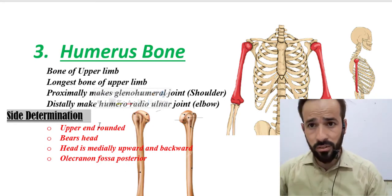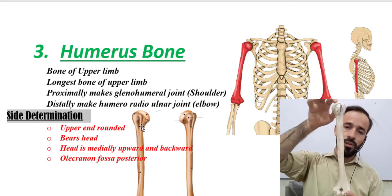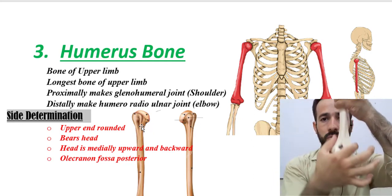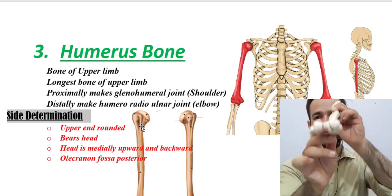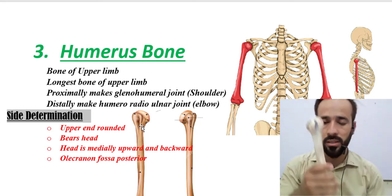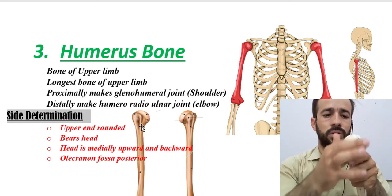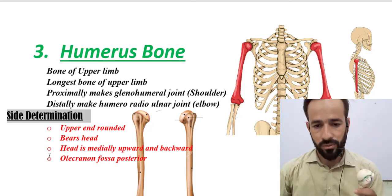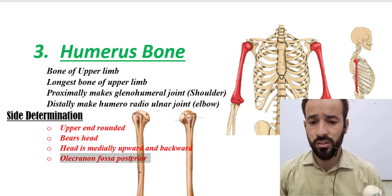Now for side determination of this bone — how to determine whether it is from the right or left side. First, note that the upper end is slightly rounded and the lower end is slightly triangular and flat. Keep the upper rounded end superiorly and the lower flat end inferiorly. The head at the upper end should be kept medially, upward, and backward.